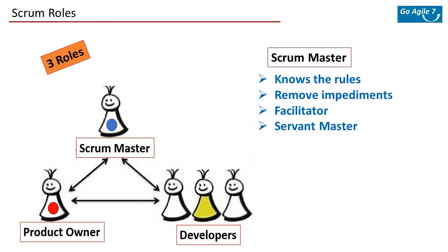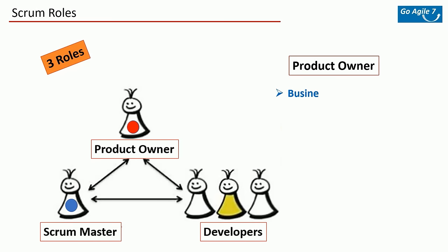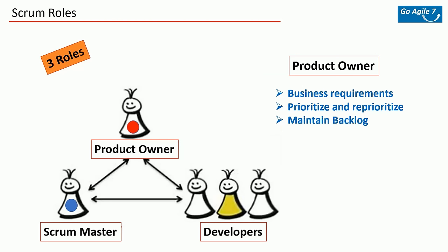The Scrum Master is a servant leader — they work to protect the team, make sure there are no impediments, and that work is moving smoothly. The Scrum Master is only a facilitator; the entire team is responsible. The Product Owner is responsible for gathering all business requirements, coordinating with business stakeholders or product managers, aligning with enterprise-wide business objectives, understanding the business value of each feature, prioritizing requirements, and maintaining the backlog.